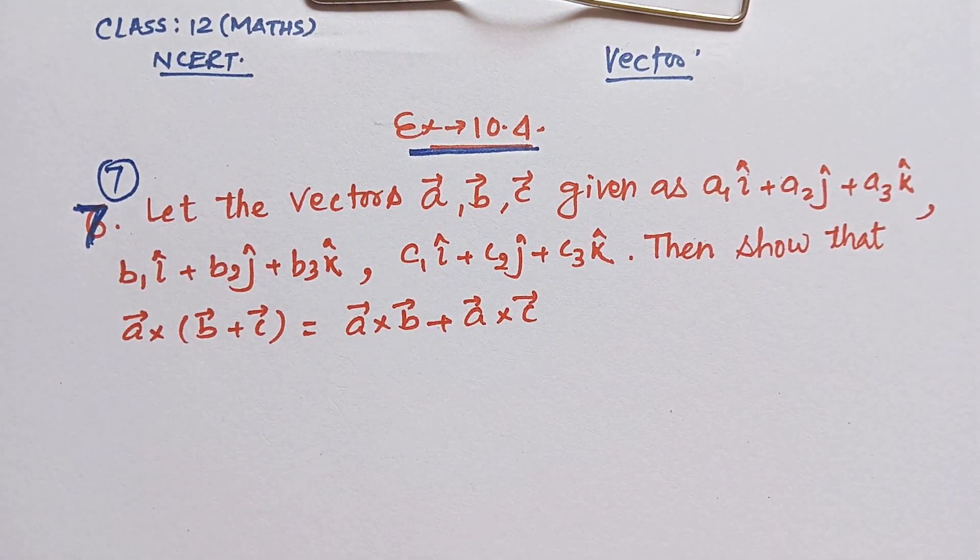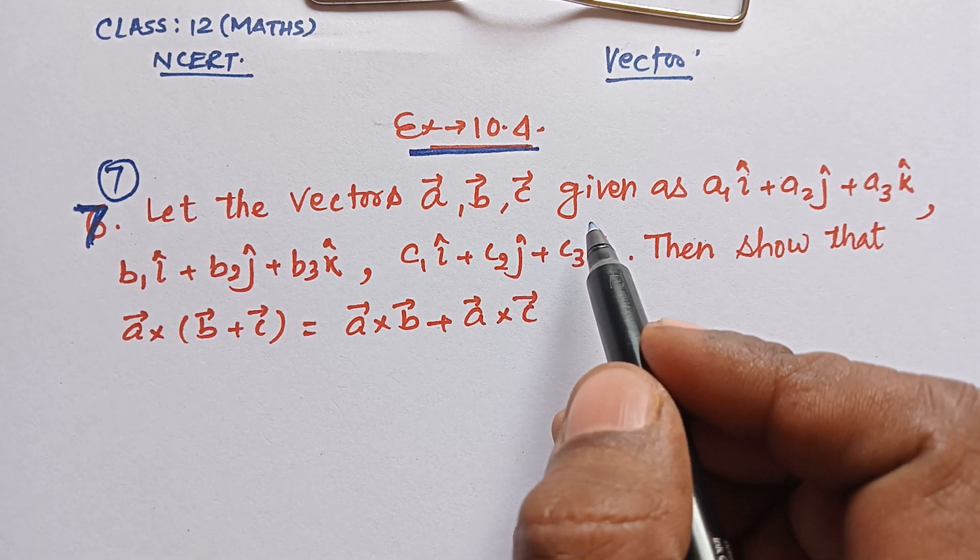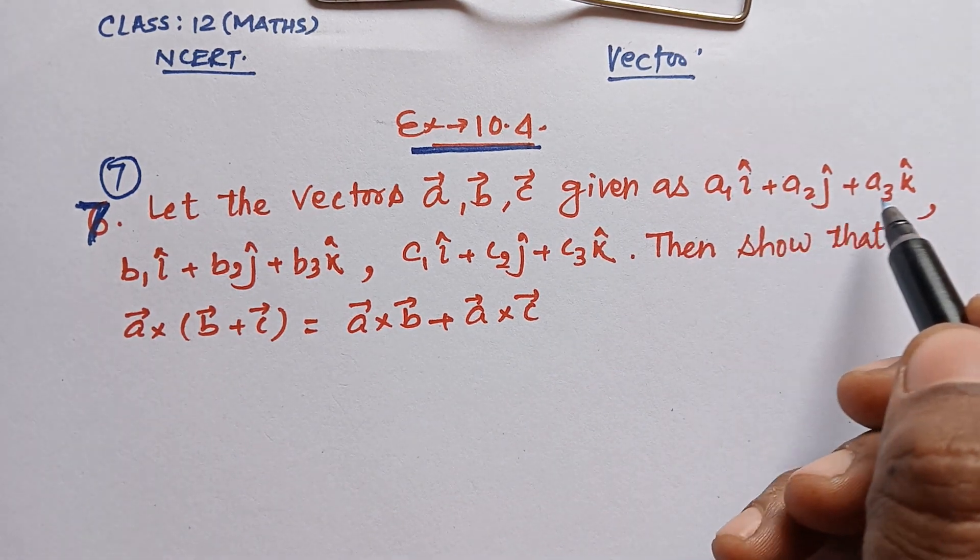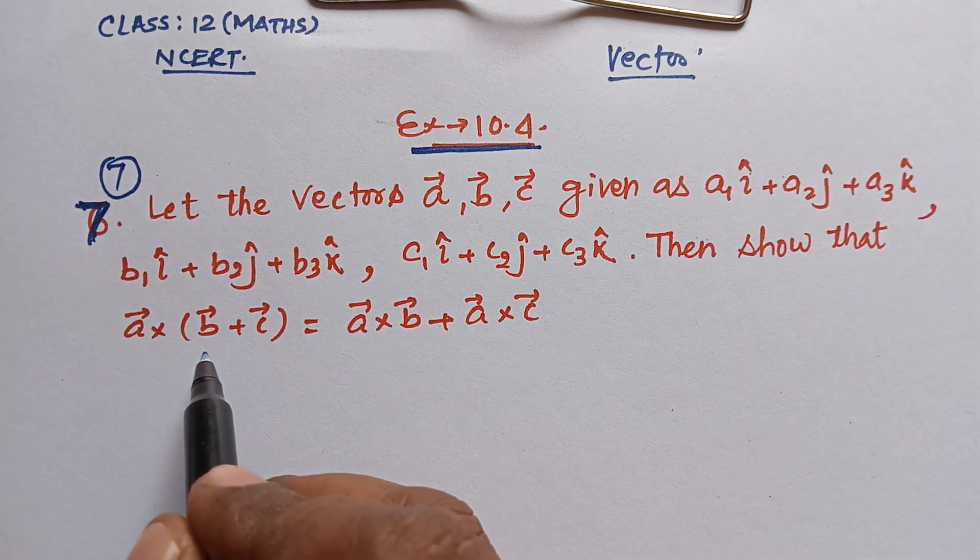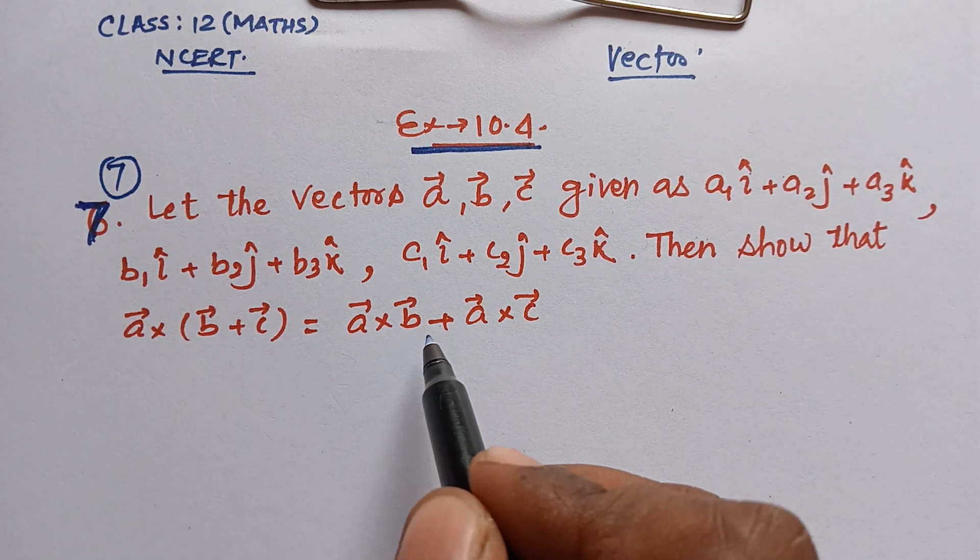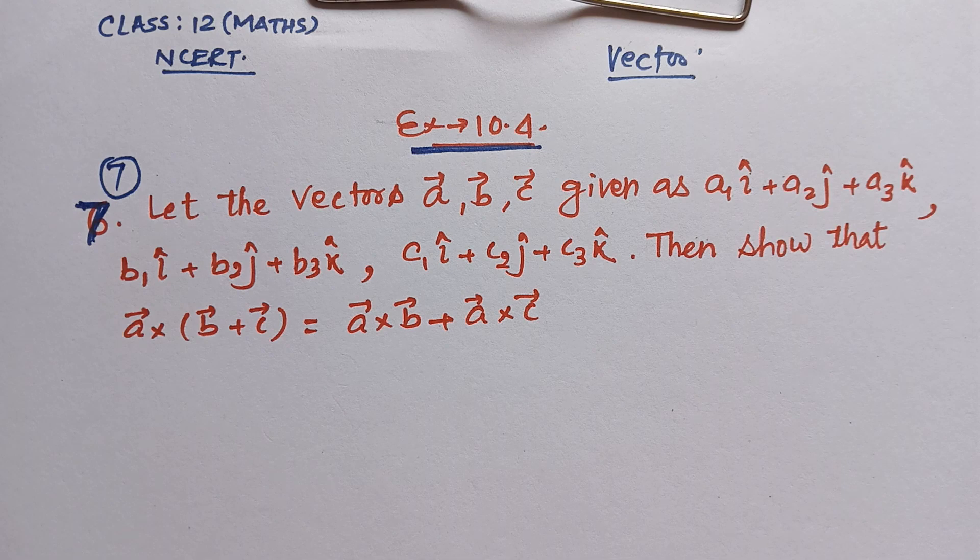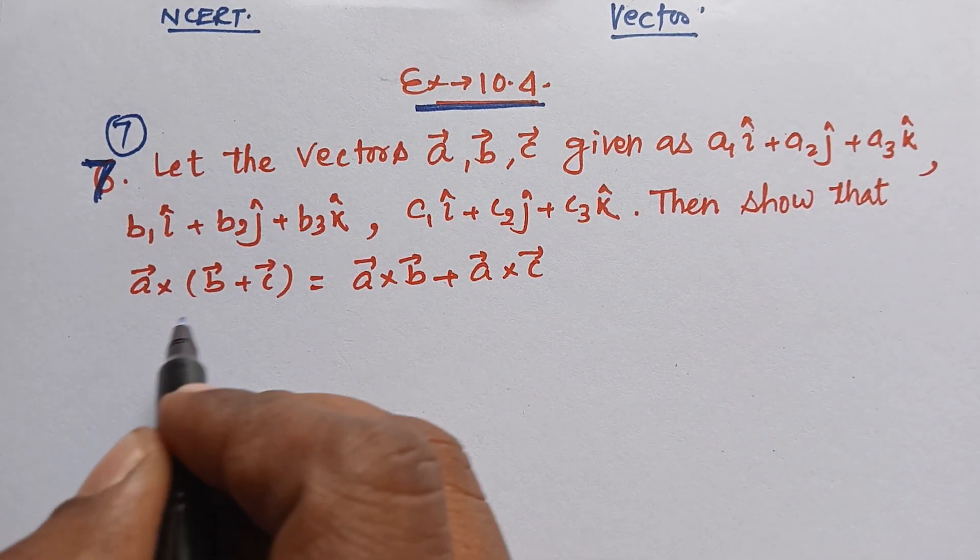Question number 7 is: Let the vectors A, B, C given as a1î + a2ĵ + a3k̂, b1î + b2ĵ + b3k̂, c1î + c2ĵ + c3k̂. Then show that A×(B+C) = A×B + A×C. We need to prove the distributive property.